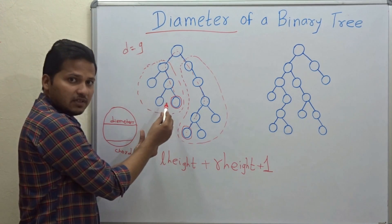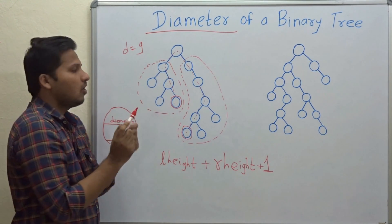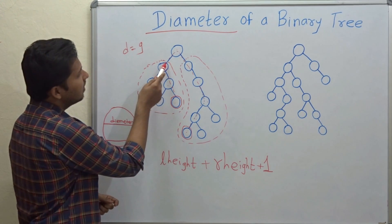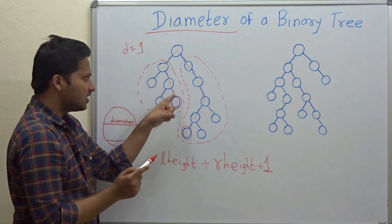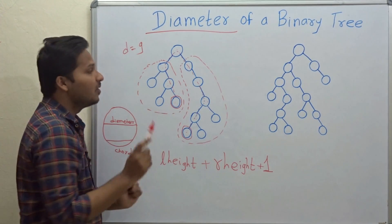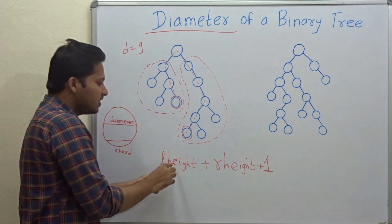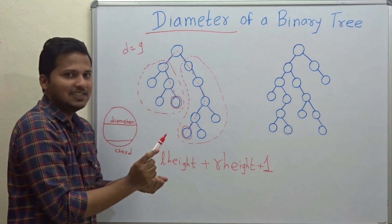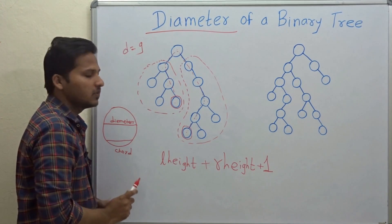As the diameter is the number of nodes on the longest path, it is equal to the longest path in the left subtree plus the longest path in the right subtree plus the root node itself — that is, left height plus right height plus 1 for the node.